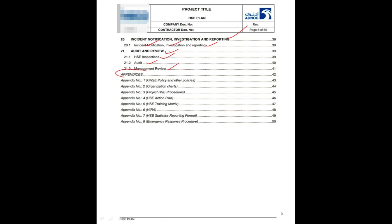Appendix. All appendices will be attached to the HSC plan as large pages. Appendix 1 is QHSC policy and other policies. Appendix 2 is the organization chart. Appendix 3 is project HSC procedures. Appendix 4 is the HSC action plan. Appendix 5 is the HSC training matrix. Appendix 6 is HIRA and risk assessment. Appendix 7 is HSC statistics reporting format. Appendix 8 is emergency response procedures.